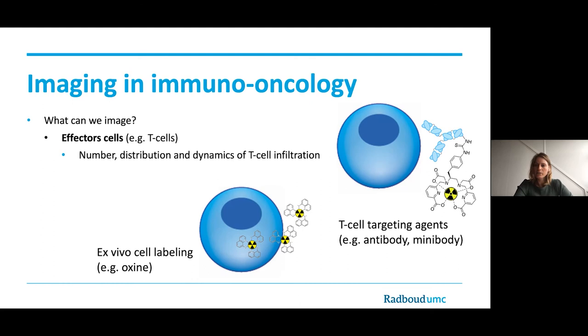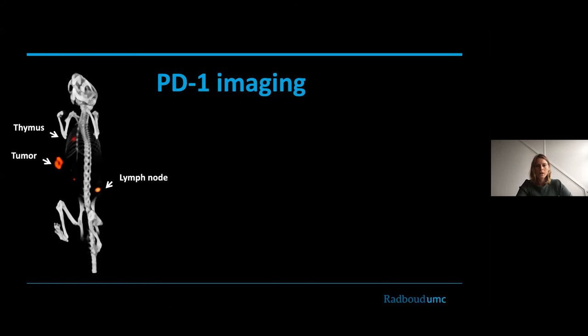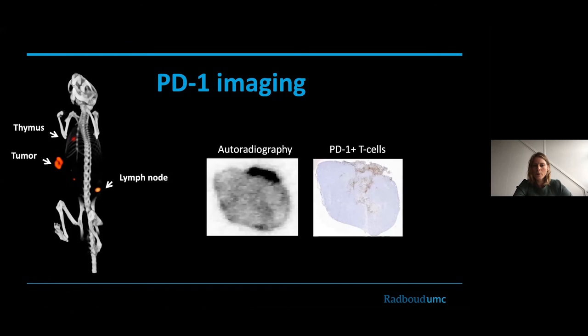I will show an example using a T cell-targeting agent: an antibody targeting PD-1 expressed by T cells. Here you see an example of a PD-1 SPECT scan. Again, you see targeting of the antibody in the tumor, and some targeting to lymph nodes and the thymus where PD-1 positive T cells reside. We also took out the tumor and stained tumor sections — showing an autoradiograph and a PD-1 staining — where you can see nice co-localization of the radioactivity and the PD-1 staining. This also demonstrates that this imaging technique can help you look at heterogeneity, for example within a single tumor.